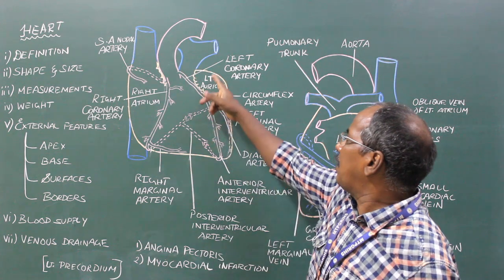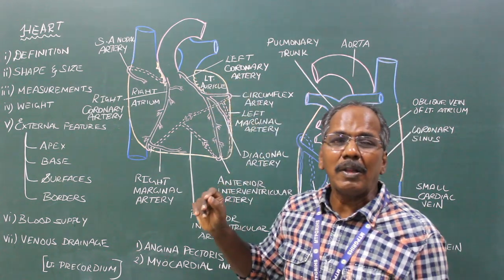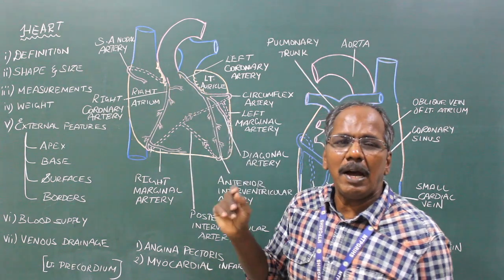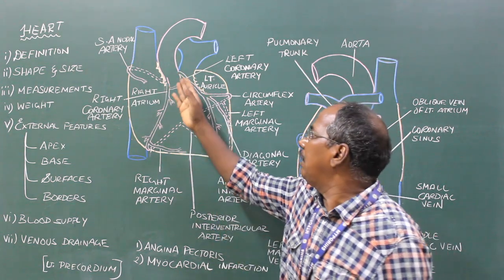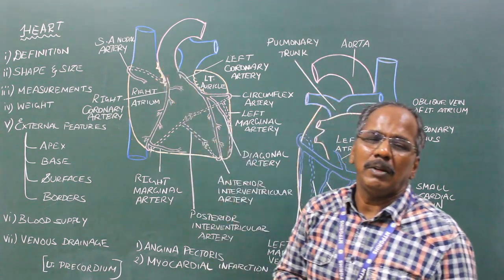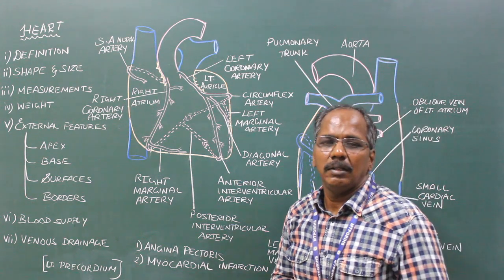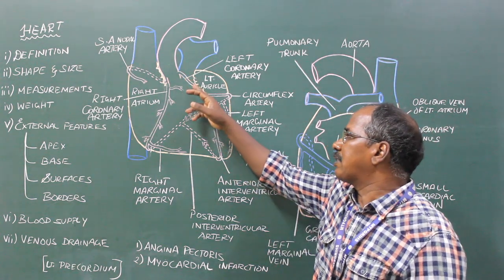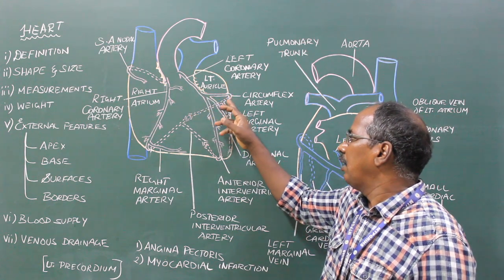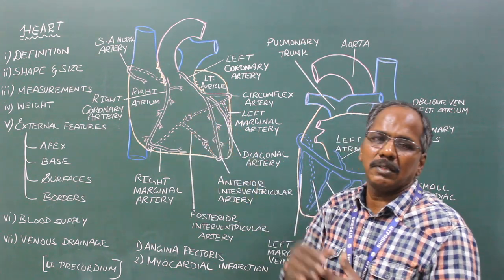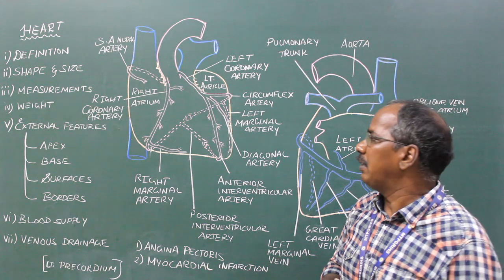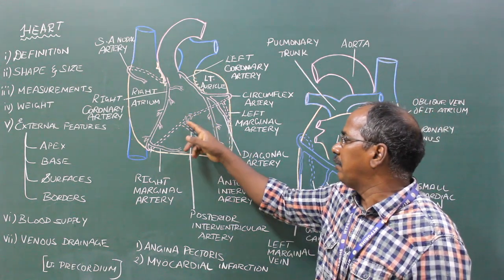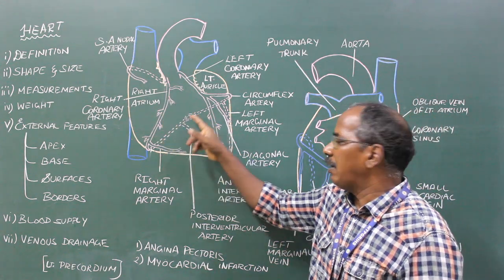Left coronary artery. Origin — it arises from the left posterior aortic sinus present in the ascending aorta. Course — it runs forwards and to the left in the coronary sulcus. Termination — it ends by anastomosing with the right coronary artery.